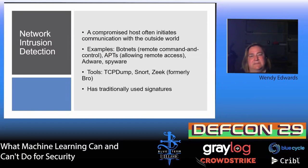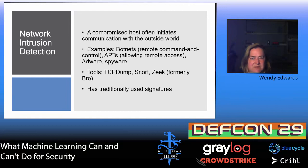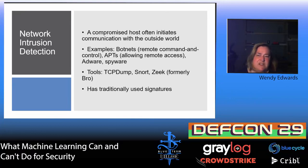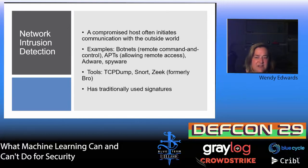For network intrusion detection: a compromised host is probably going to need to initiate communication somehow, because a firewall is not going to let you go in and establish a connection with that host. Examples include botnets, APT, adware, and spyware. Tools you can use: TCPdump will basically capture all your network traffic. Snort is a rules-based engine. Zeek, formerly known as Bro, supports deep packet inspection and has its own programming language. Traditionally it uses signatures, but that can be a limitation — for example when dealing with a zero-day that does not have a signature.